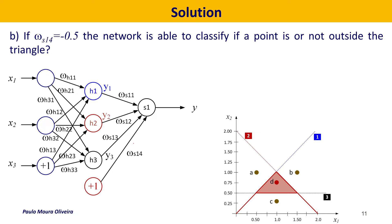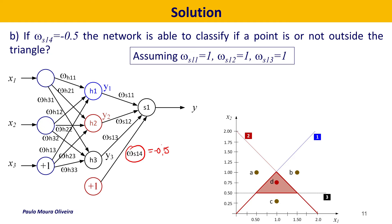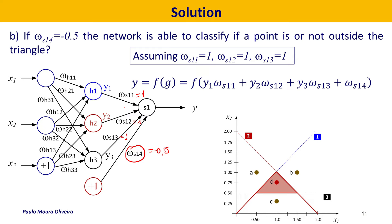To conclude the problem, the output layer question asks: if ω_s14 equals minus 0.5, can the network classify whether a point is inside or outside the triangle? Assuming ω_s11 equals ω_s12 equals ω_s13 equals 1, the sum at the output neuron becomes Y1 times ω_s11 plus Y2 times ω_s12 plus Y3 times ω_s13 plus the bias times ω_s14, which simplifies accordingly.